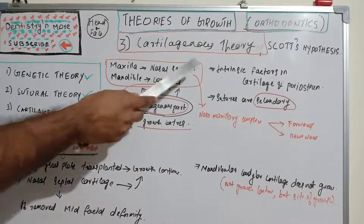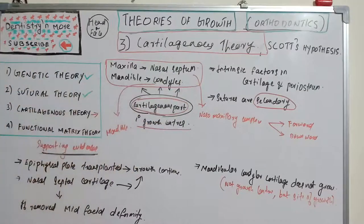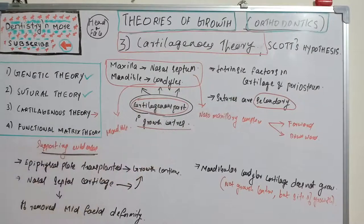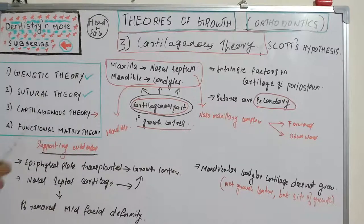The two key cartilages are the nasal septal cartilage in the maxilla and the condylar cartilage in the mandible. These cartilages produce intrinsic factors that drive the growth and development of the nasomaxillary complex and mandible. That is how cartilaginous theory explains growth and development of the head and face region.